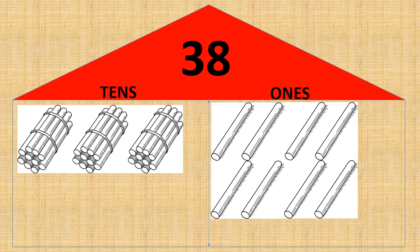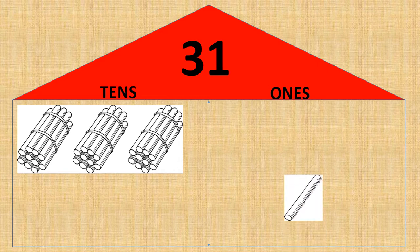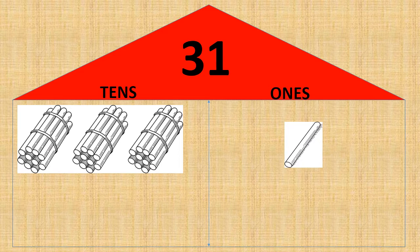Let's move further and see more examples. Now in this place value house, we already have the number. We need to find out what is missing. So what is the number here? Thirty-one. That means three tens and one one. So in the tens place, we have one, two, three — three bundles of tens.